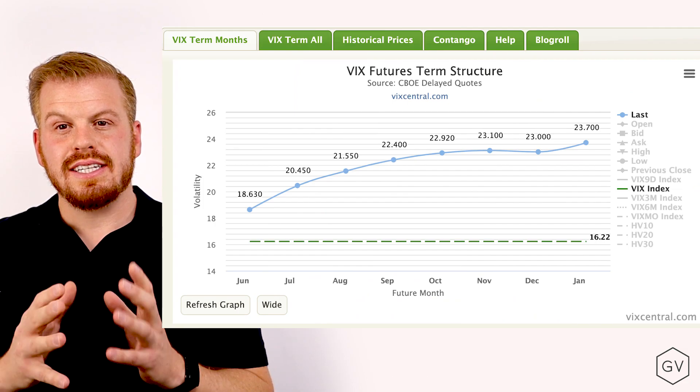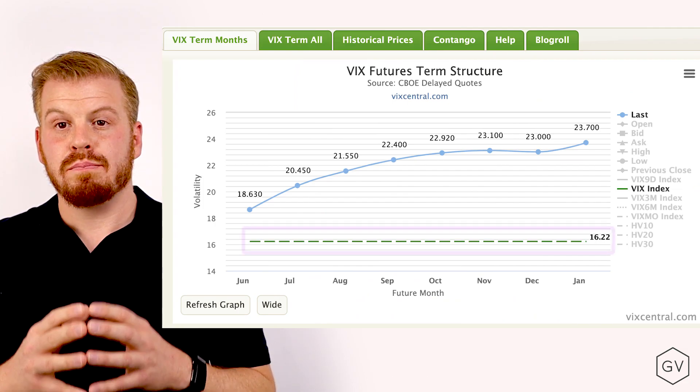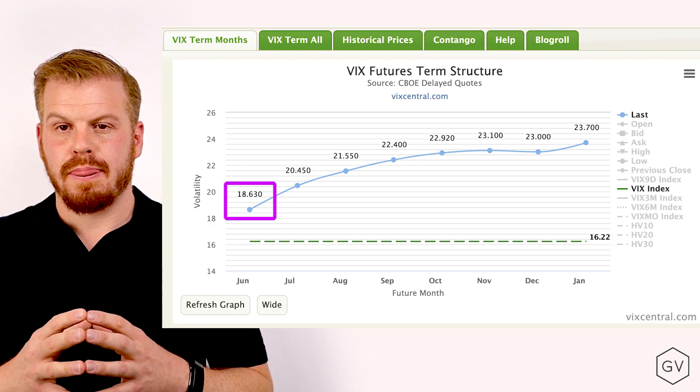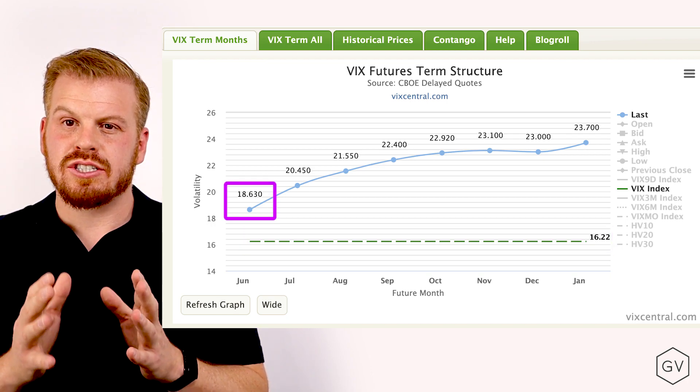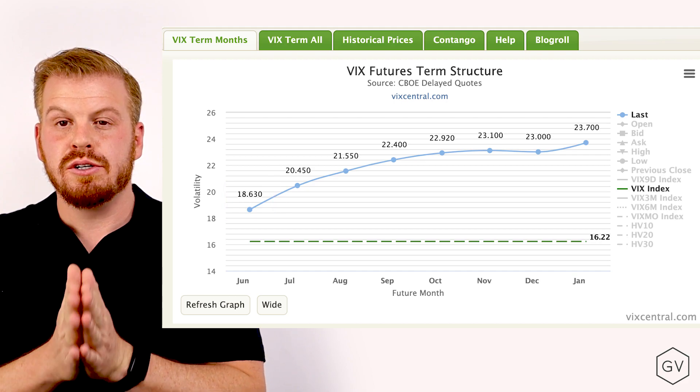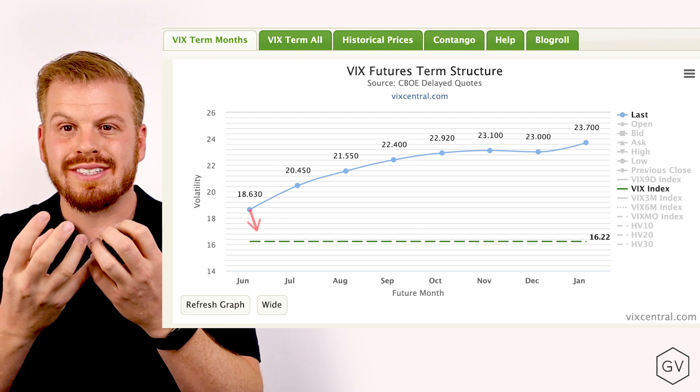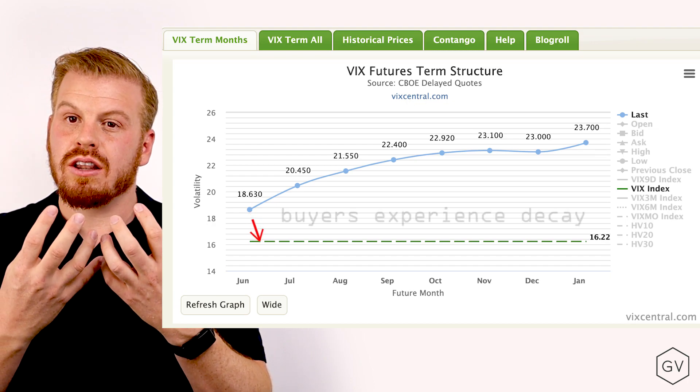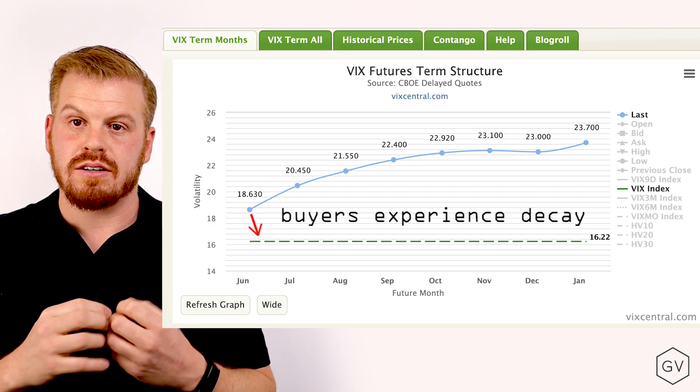Let's go ahead and look at an example with VIX futures. You can see that the VIX index is trading below 17, but the front month VIX future is trading above 18. Now, if the VIX index just stays put here until the futures expiration, the future will decay all the way down to the same price as the VIX. And so there will be a loss attributed to VIX futures buyers.